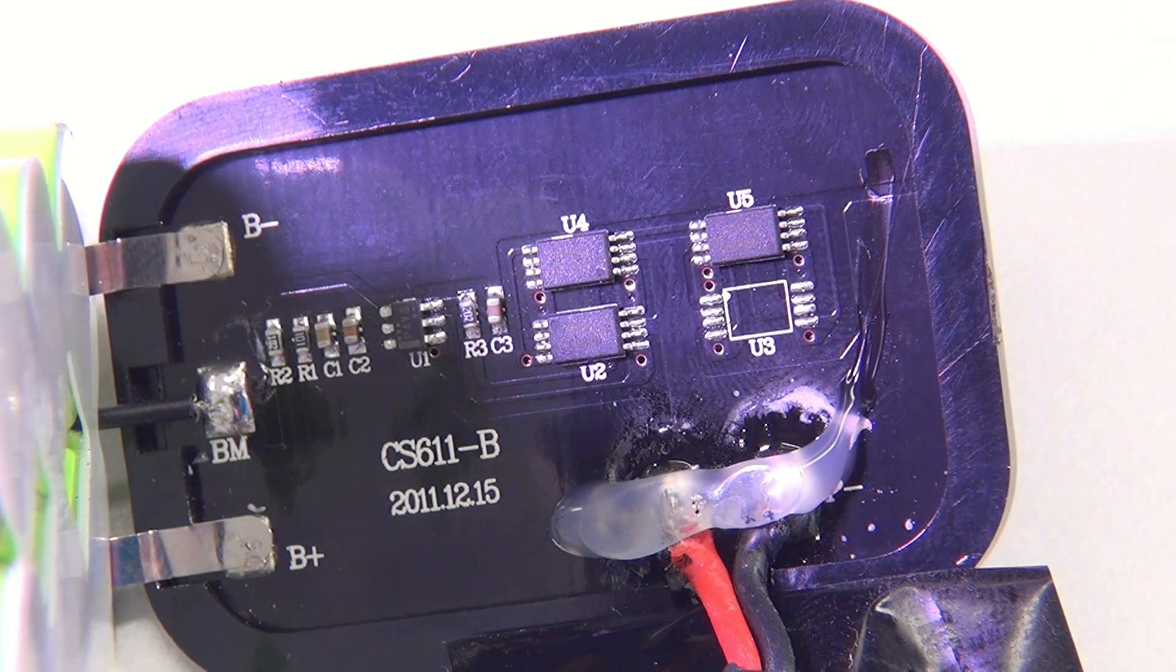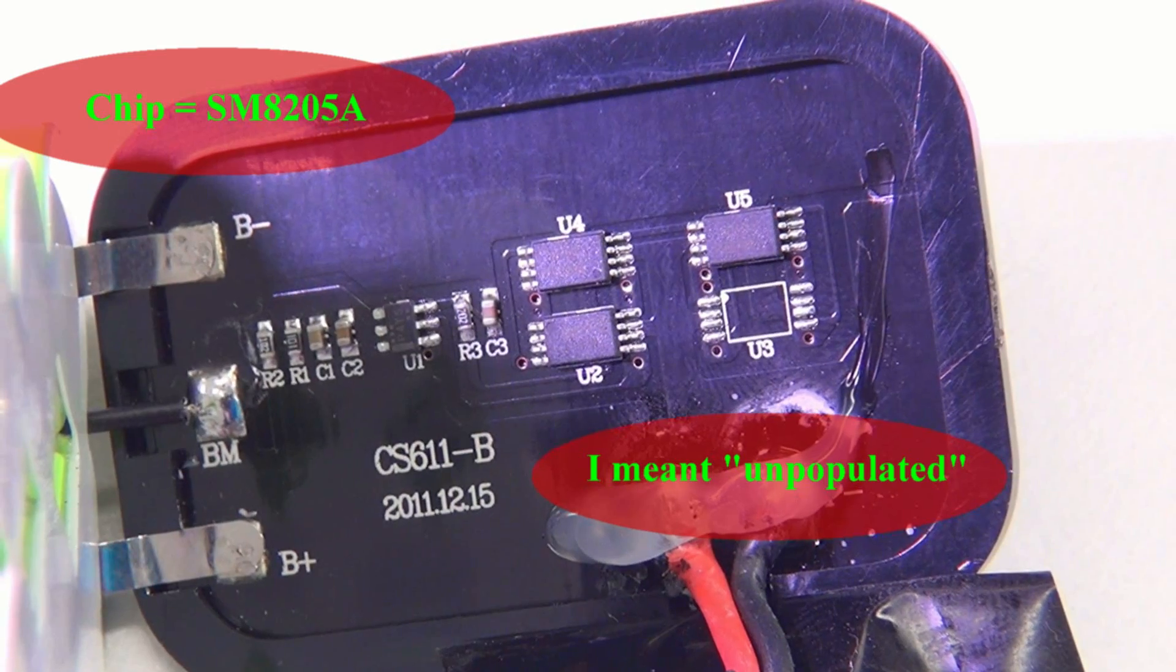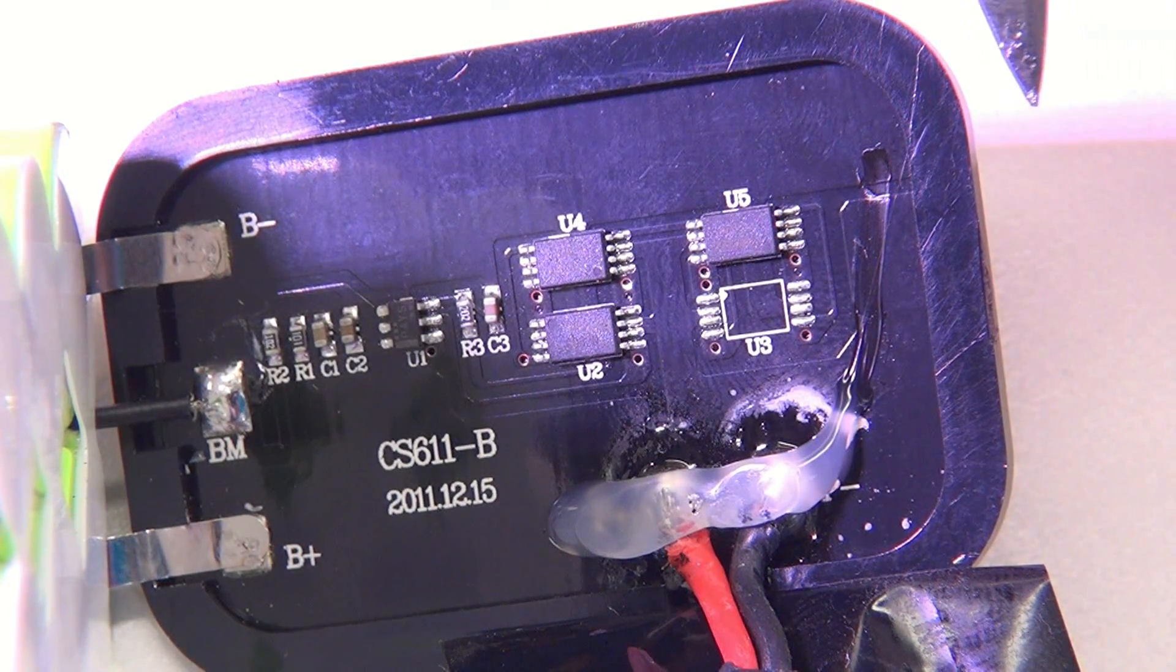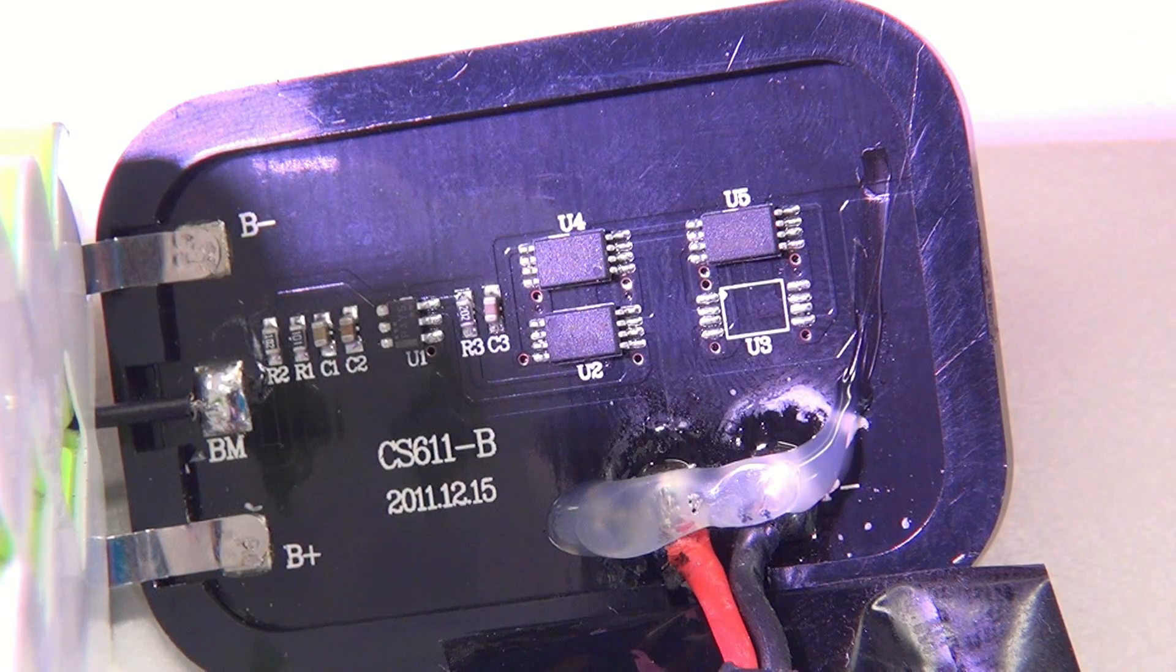You've got the three ICs, the three large ones over there. The one labeled U3 is missing. These three chips are identical. And the data sheet says they're IC protection and primer chips.